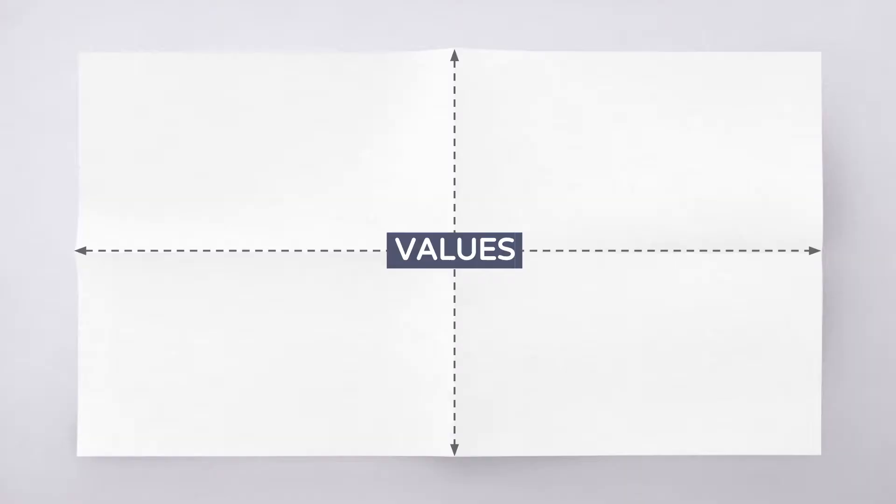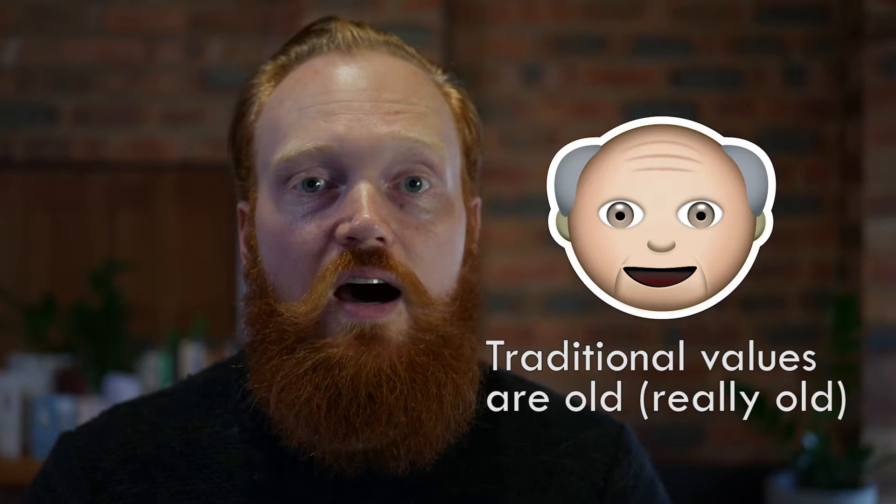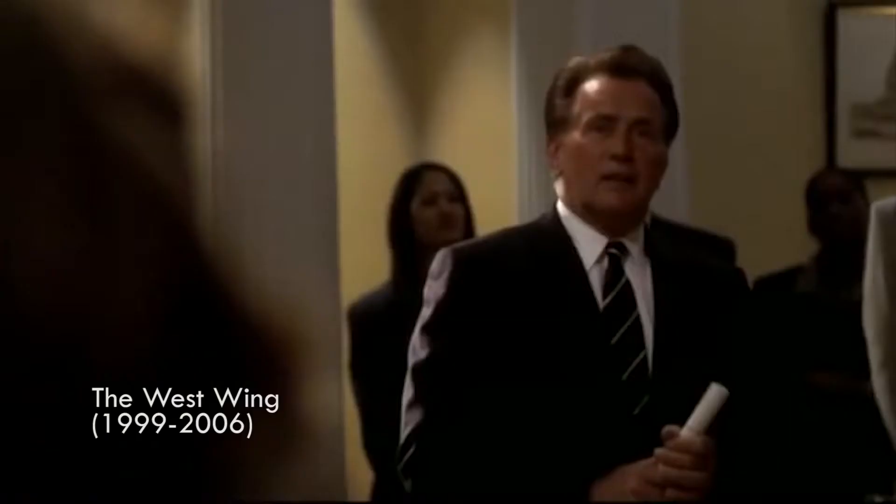Although dominant, oppositional and emerging values are the three most important ones for us to know as part of this area of study, there is a fourth type of social value we should also know — and that's what's called a traditional value. If we think about the oppositional and dominant value being polar opposites to one another, a traditional value is one that sits in polar opposite to the emerging value. It is something that has been held in society over a long period of time — we're talking hundreds of years. These traditional values might be those that we see tied to older institutions like schools or like the church.